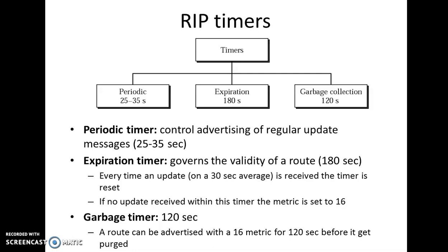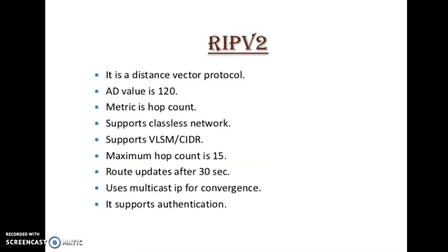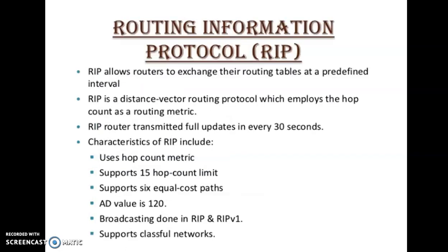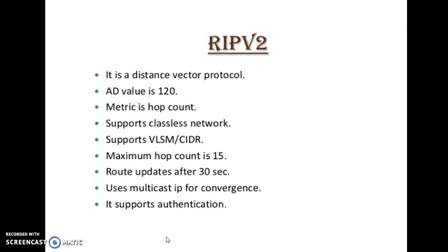To summarize, RIP is the oldest Dynamic Routing Protocol, which uses hop count as its metric with a maximum of 15 hops. It has two versions: version 1 and version 2. The major difference between them is that version 1 supports broadcasting and classful IP addressing, while version 2 supports classless IP addressing, multicast, and authentication.